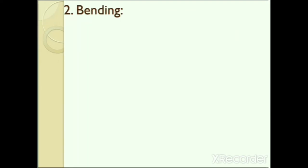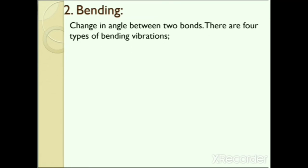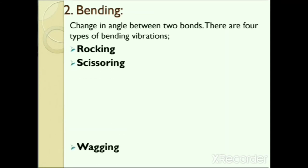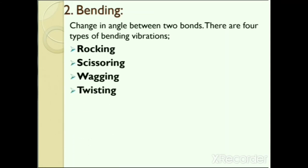The second type of vibration is bending vibration, also called deformation vibration. In this type, a change in bond angle occurs between bonds with a common atom. These are further subdivided into in-plane and out-of-plane bending vibrations. Bending vibrations are of four types: rocking, scissoring, wagging and twisting.